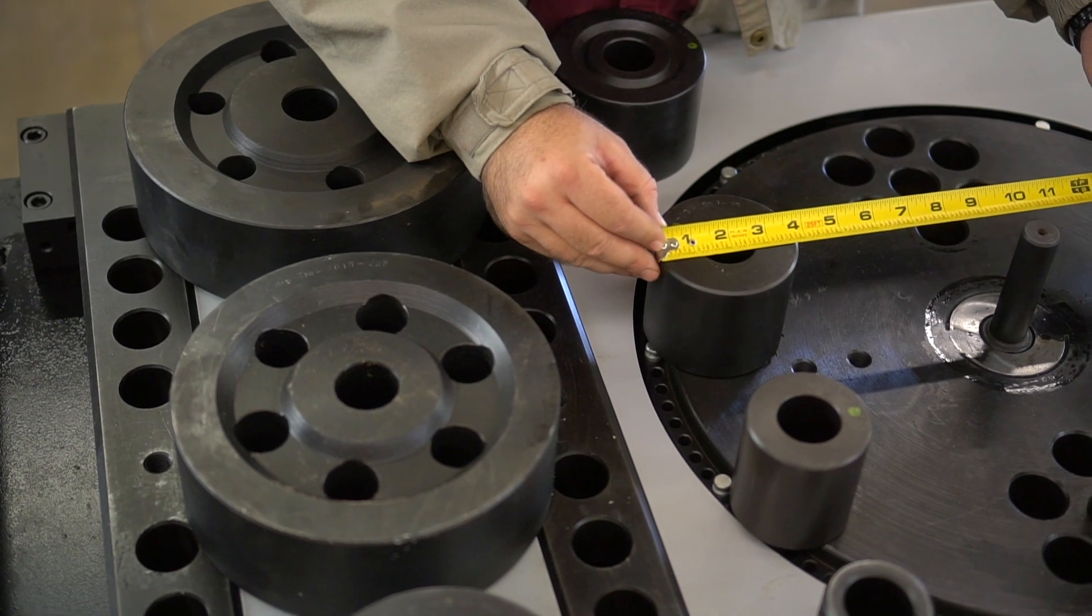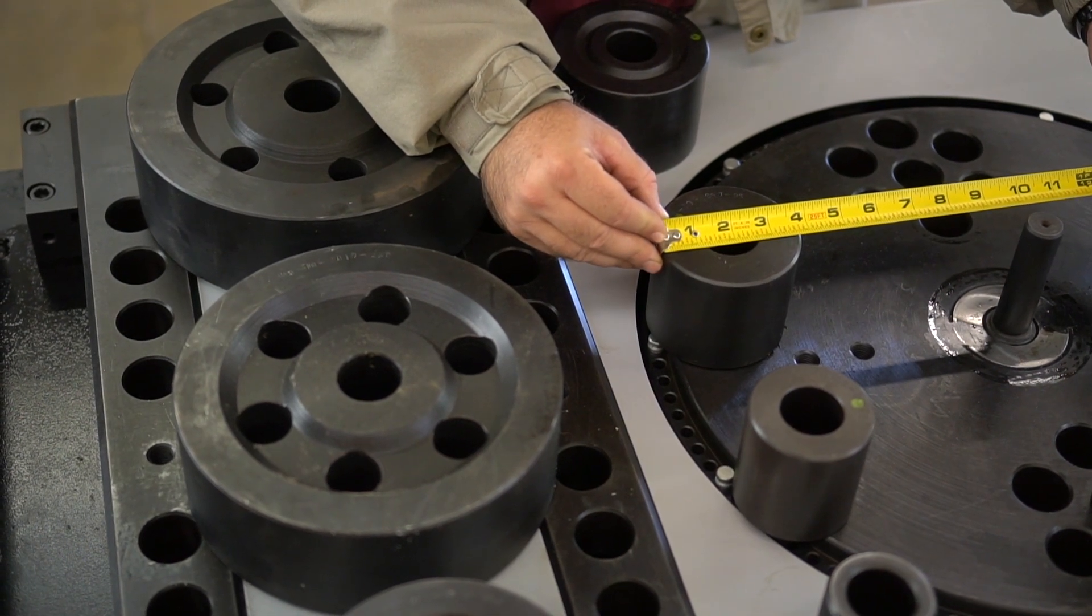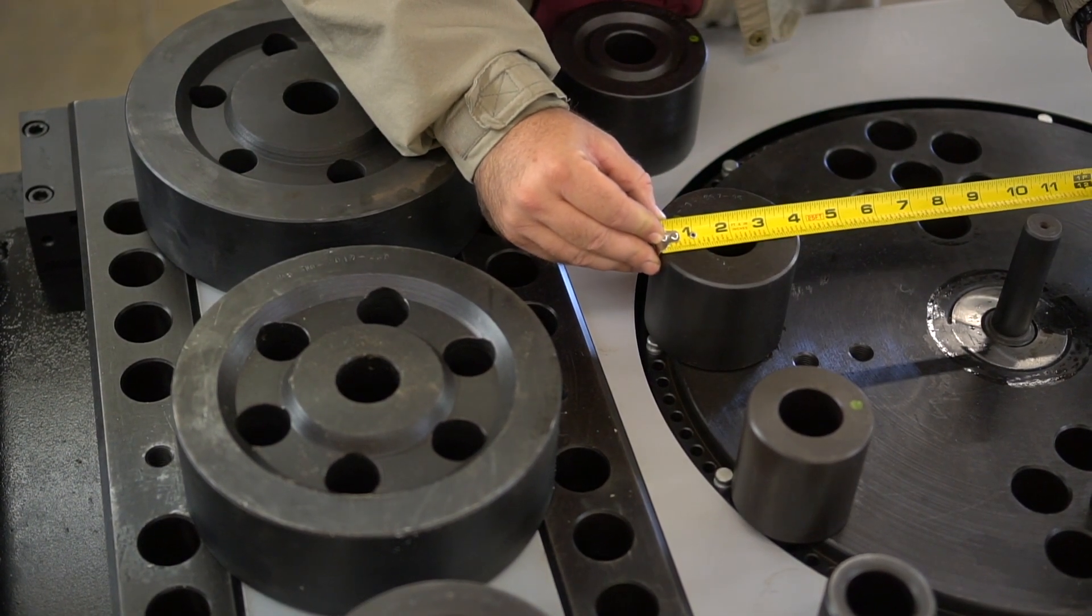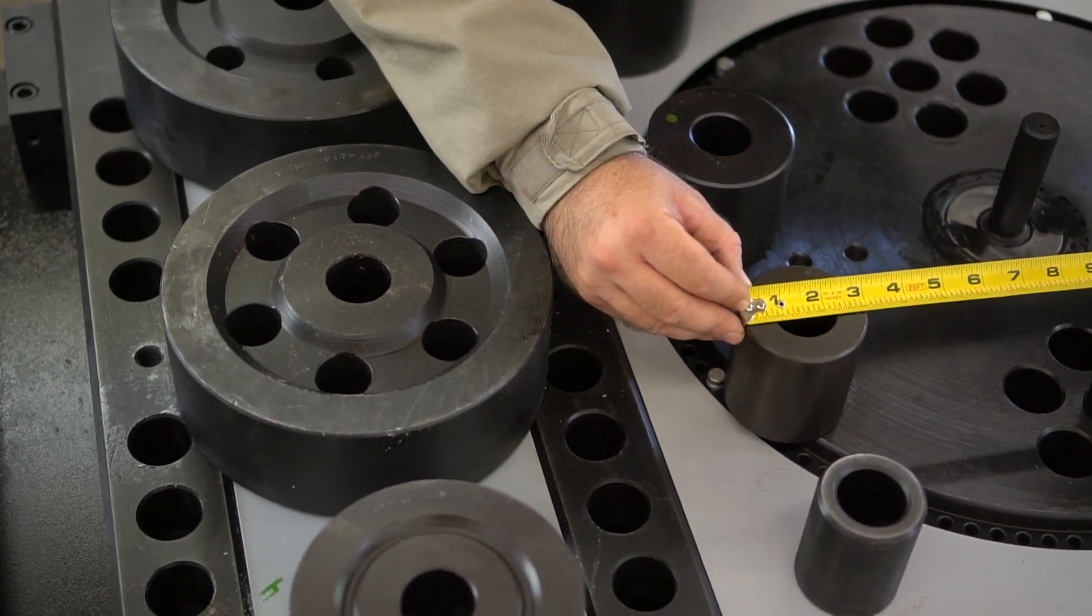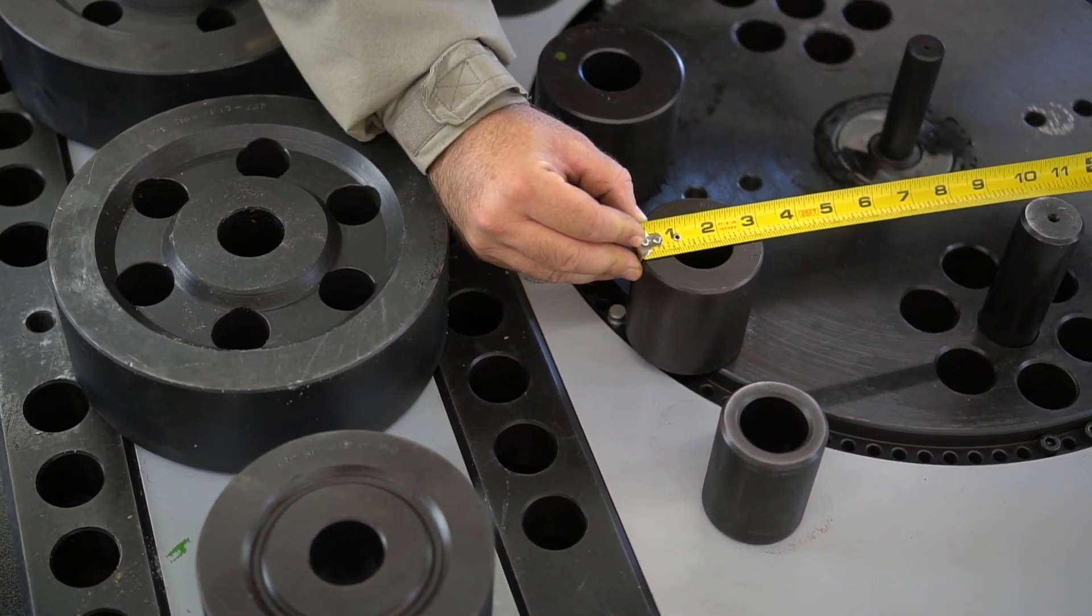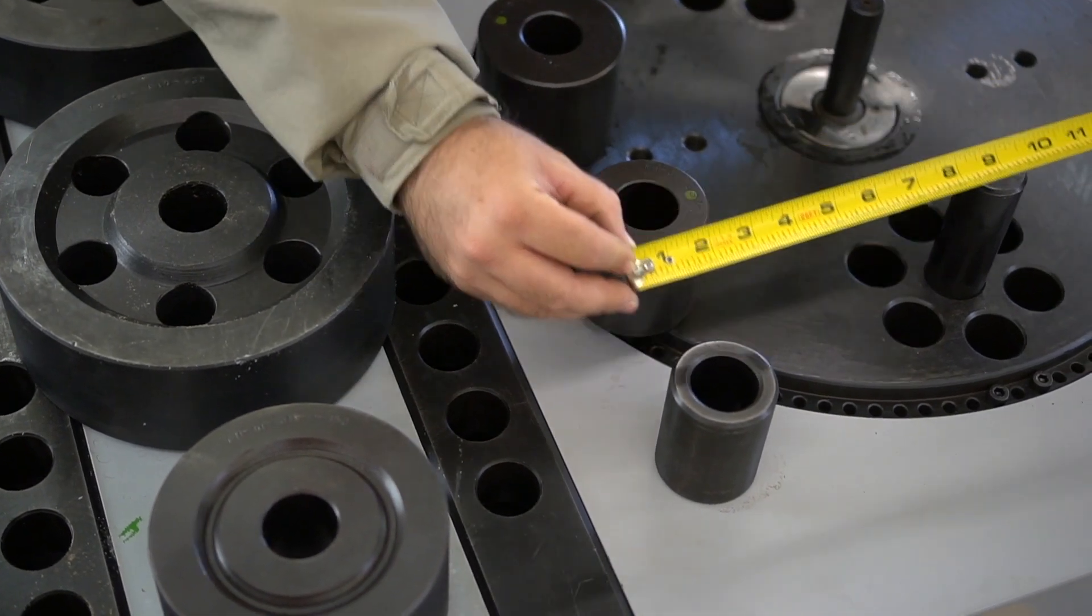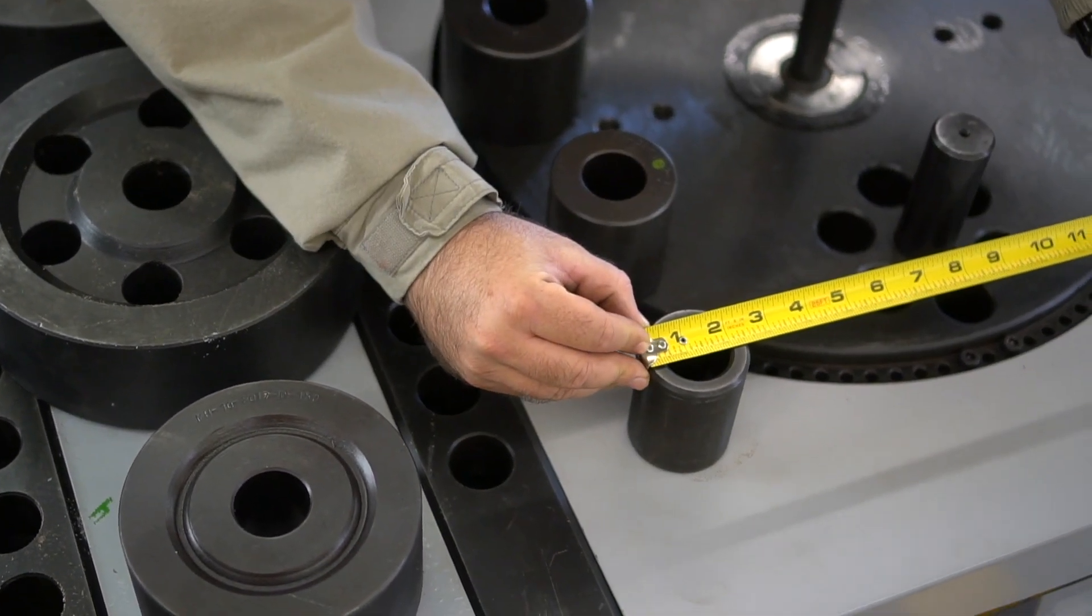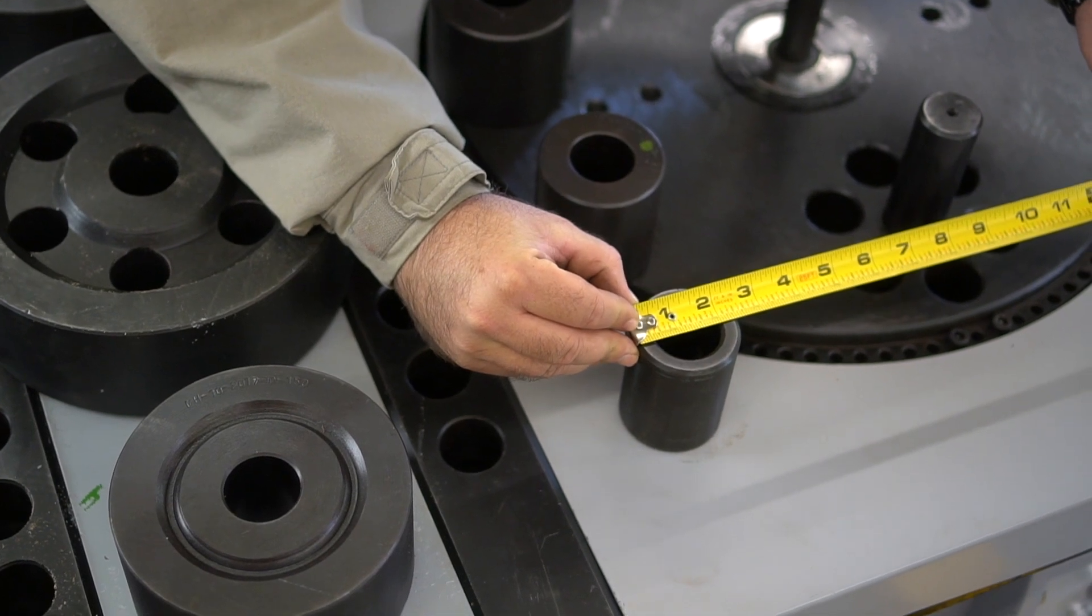Next is a three and three quarter inch or 95 millimeter roller for a number five bar. And then next is a three inch or 75 millimeter used for a number four bar. And finally we have the two and three eighths or 60 millimeter for three bar.